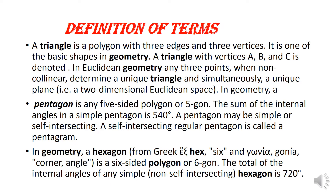A pentagon is any five-sided polygon or five-gon. When you see pentagon, five-gon. The sum of the internal angles in a simple pentagon is 540 degrees. A pentagon may be simple or self-intersecting. A self-intersecting regular pentagon is called a pentagram.